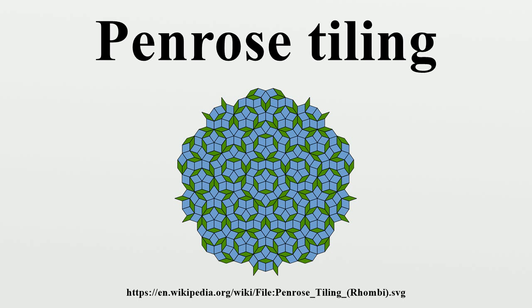Penrose's first tiling uses pentagons and three other shapes: a five-pointed star, a boat, and a diamond. To ensure that all tilings are non-periodic, there are matching rules that specify how tiles may meet each other. There are three different types of matching rule for the pentagonal tiles. It is common to indicate the three different types of pentagonal tiles using three different colors, as in the figure above right.